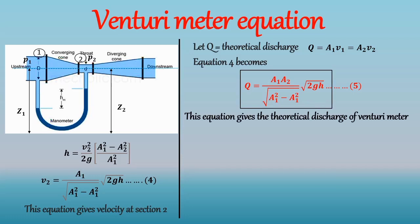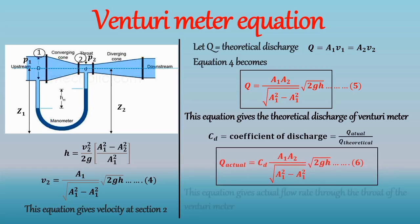So the coefficient of discharge for the Venturimeter that is CD is defined as the ratio of the actual flow rate through the Venturi meter tube to the theoretical flow rate. So the Venturi meter discharge coefficient is given by. As Q actual will always be less than Q theoretical due to frictional losses, hence the value of CD is always less than 1. Hence the equation becomes Q actual is equal to.